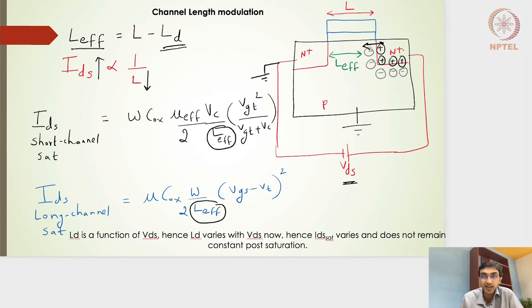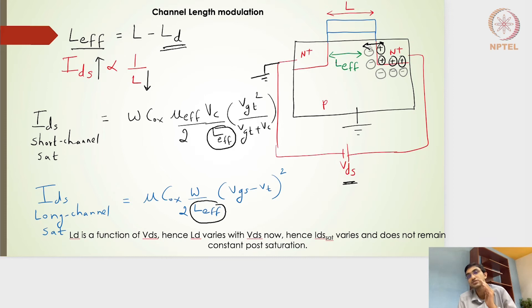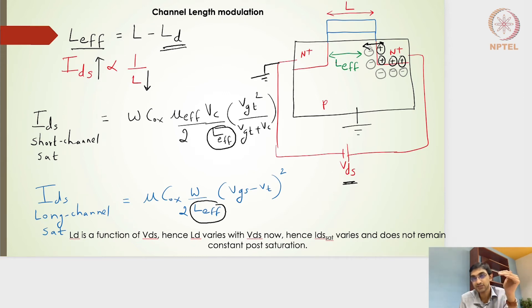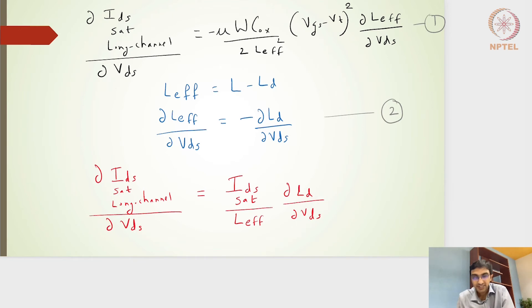The saturation current IDS_sat does not remain constant post saturation. Even after VDS exceeds the saturation value, increasing VDS further grows the depletion region length, decreases the effective channel length, and thereby increases the current. That is why we see a slight positive slope in the IDS characteristic instead of a constant flat line after VDS saturation.